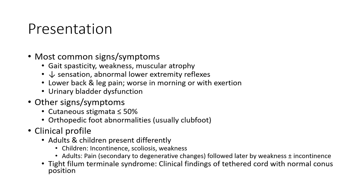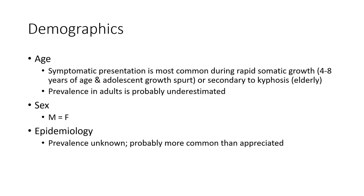Tight filum terminale syndrome: Clinical findings of tethered cord with normal conus position. Demographics: Symptomatic presentation is most common during rapid somatic growth — around four, three, to eight years of age — and in adults during adolescent growth, or secondary to scoliosis and loading. Prevalence in adults is probably underestimated, equal between male and female. In asymptomatic cases, prevalence is unknown, probably more common in females.